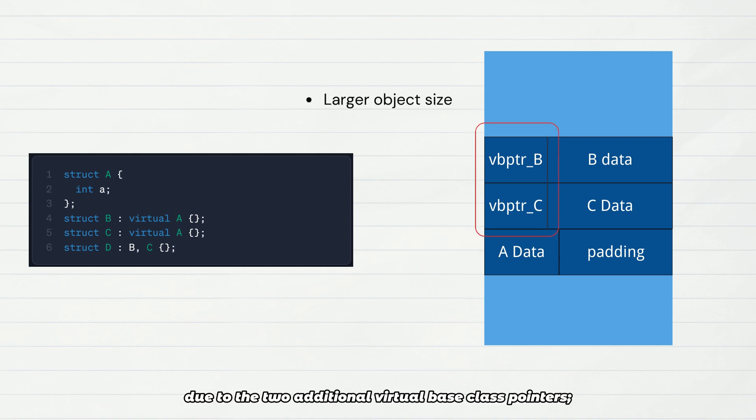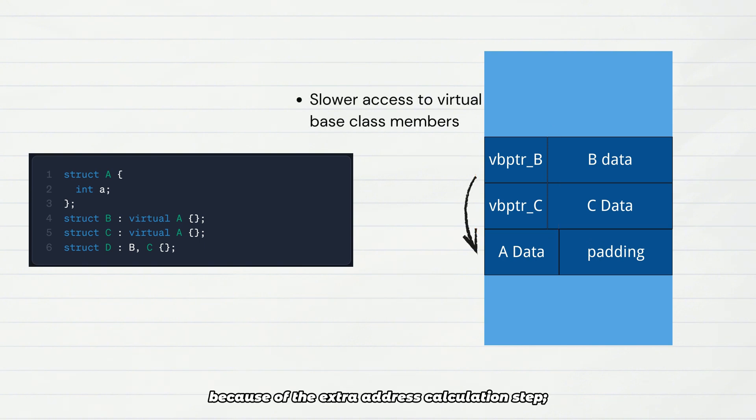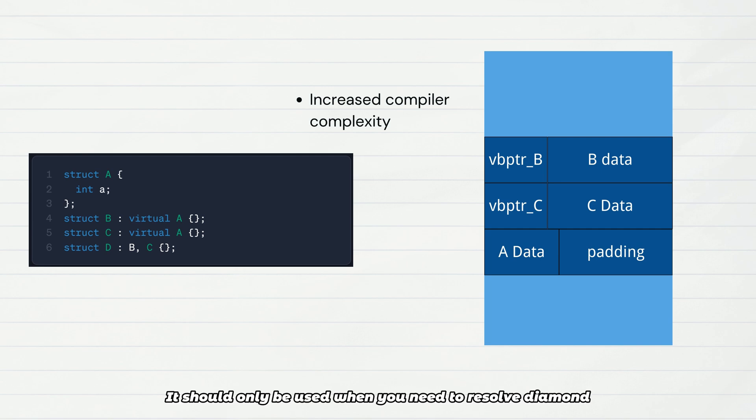These are the costs of virtual inheritance: larger object size due to the two additional virtual base class pointers, slower access to virtual base class members because of the extra address calculation step, and increased compiler complexity needing to maintain the virtual base class offset tables. Therefore, virtual inheritance is not a silver bullet. It should only be used when you need to resolve diamond inheritance redundancy; otherwise, it will only add unnecessary overhead.